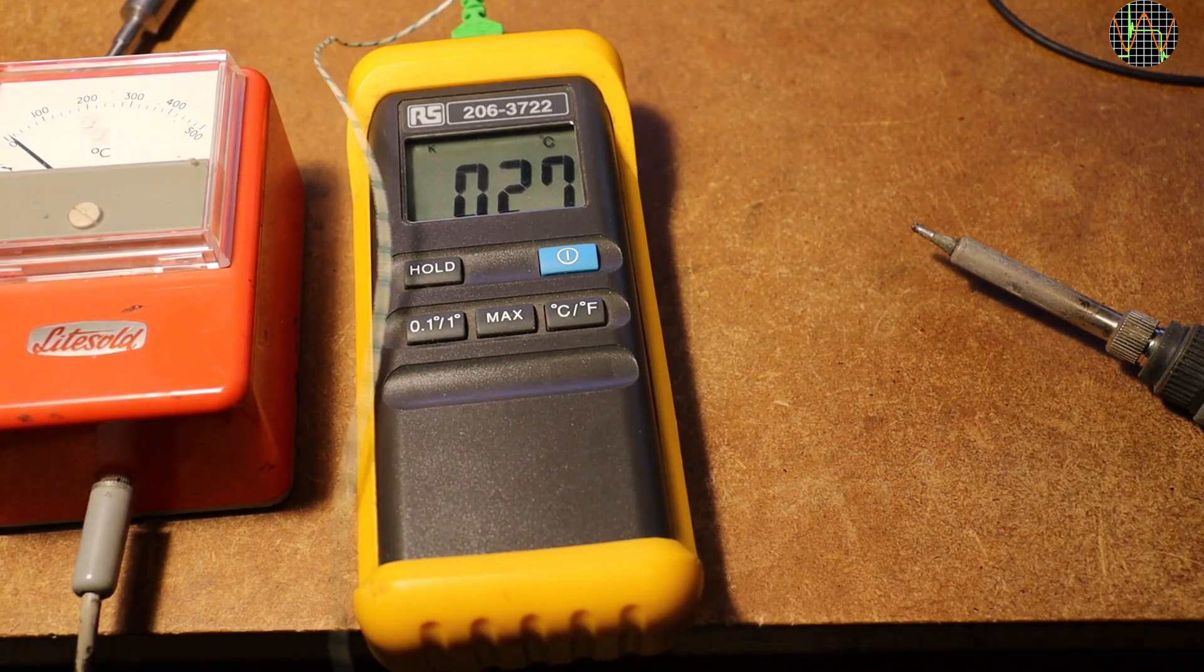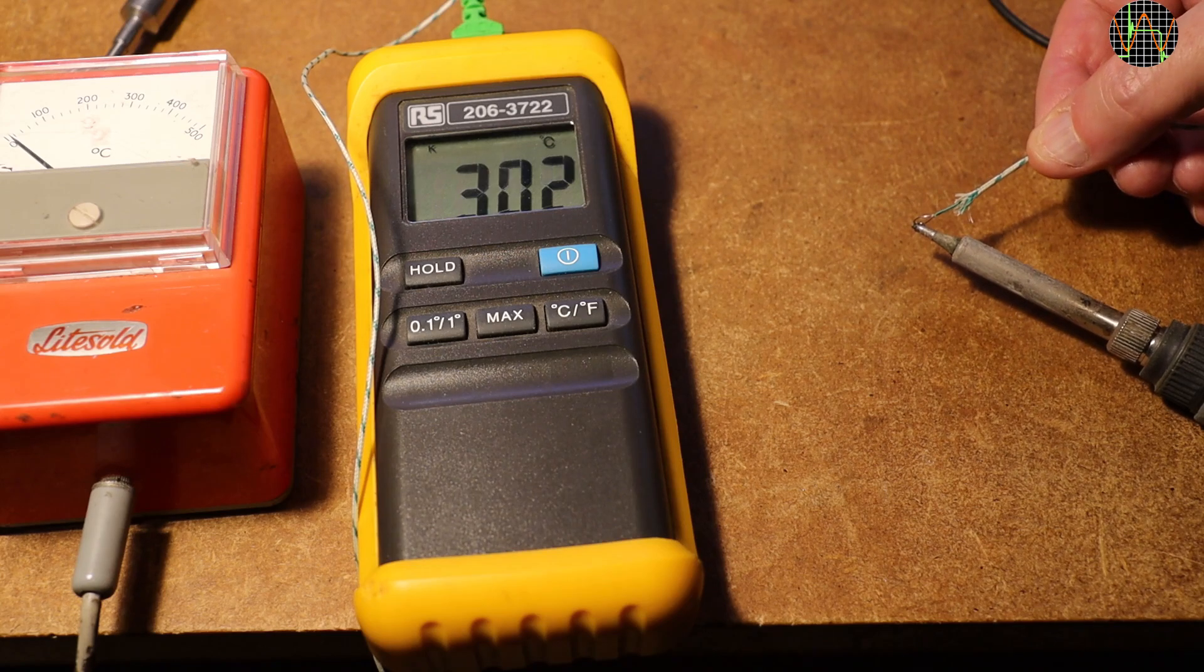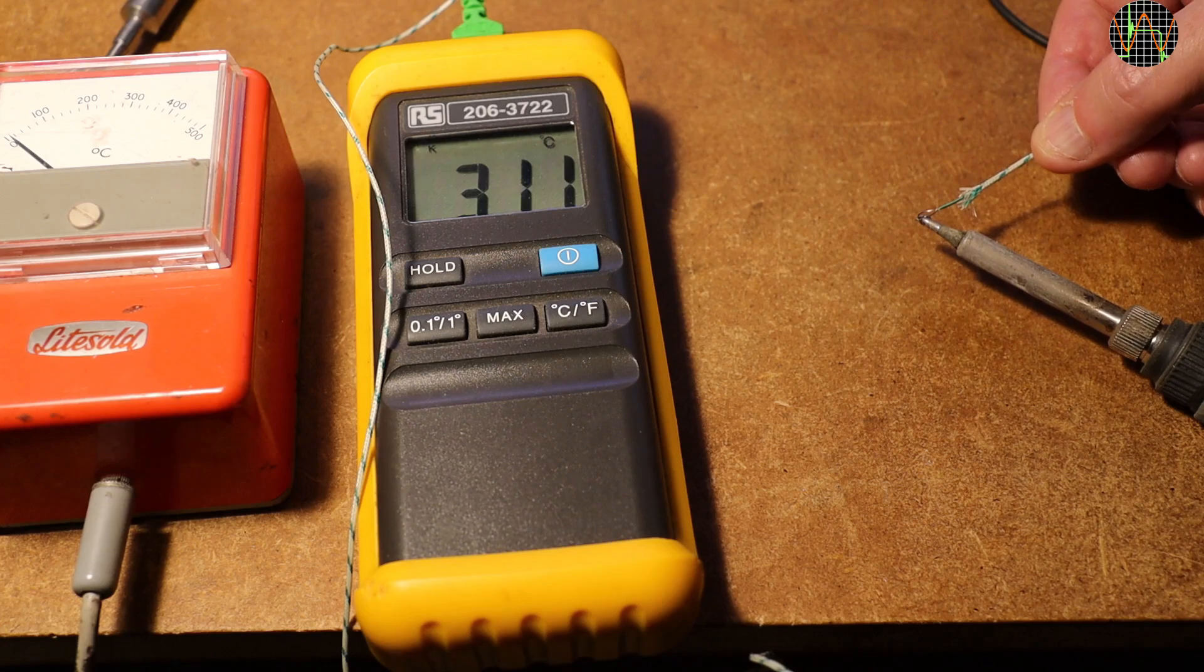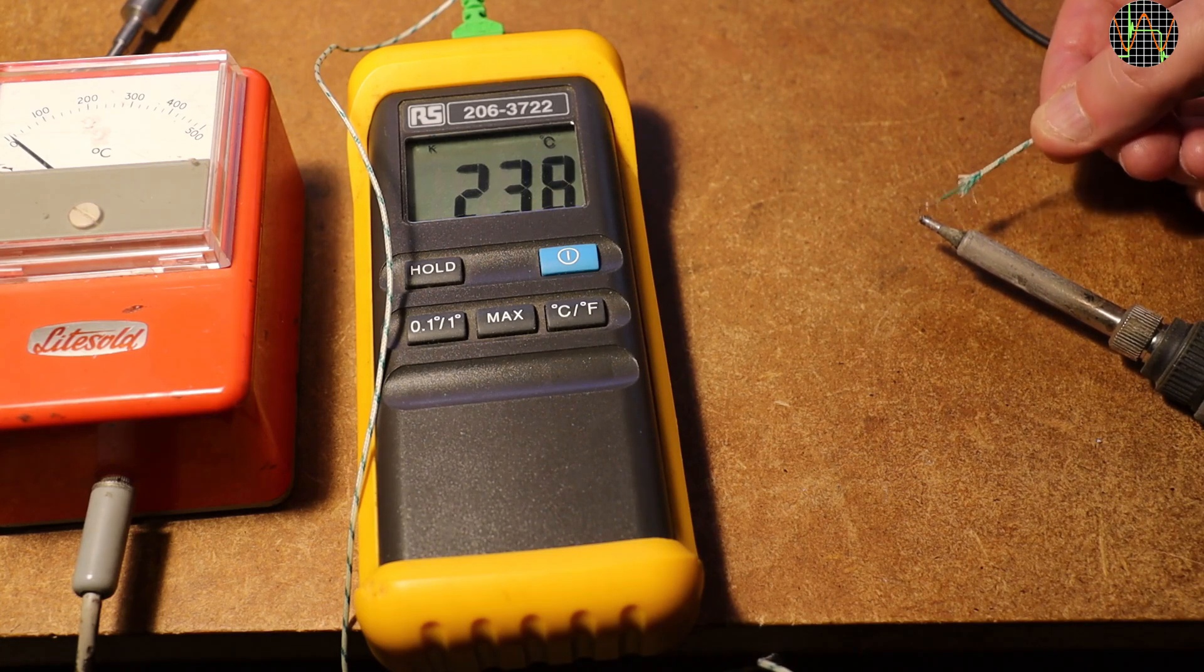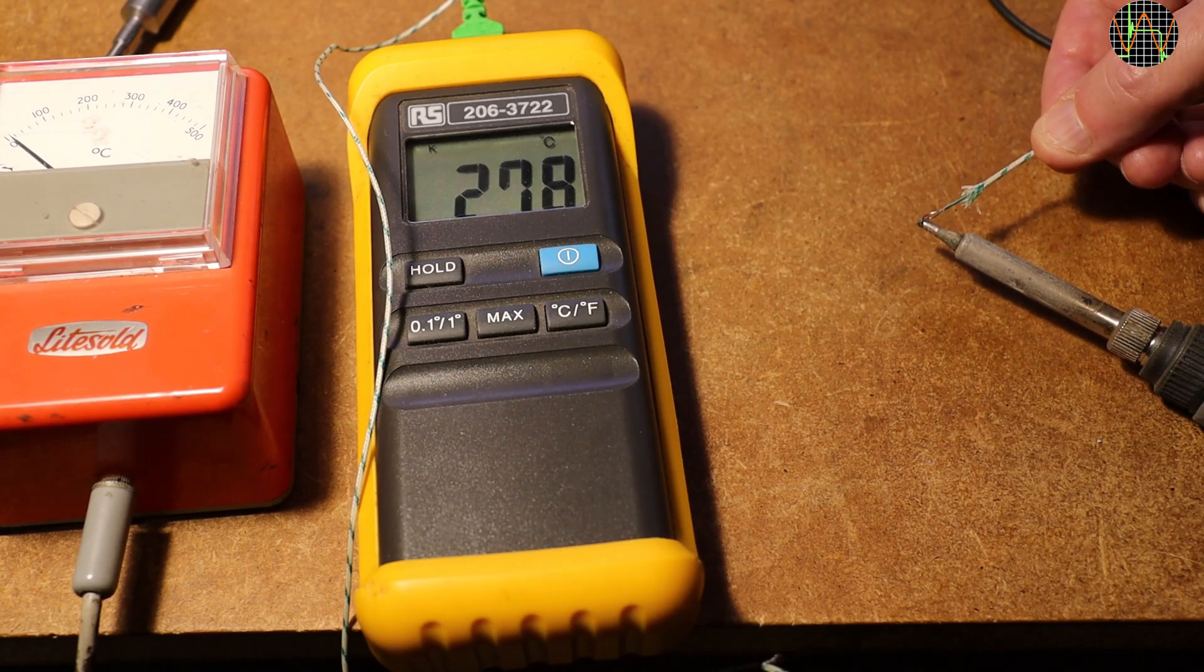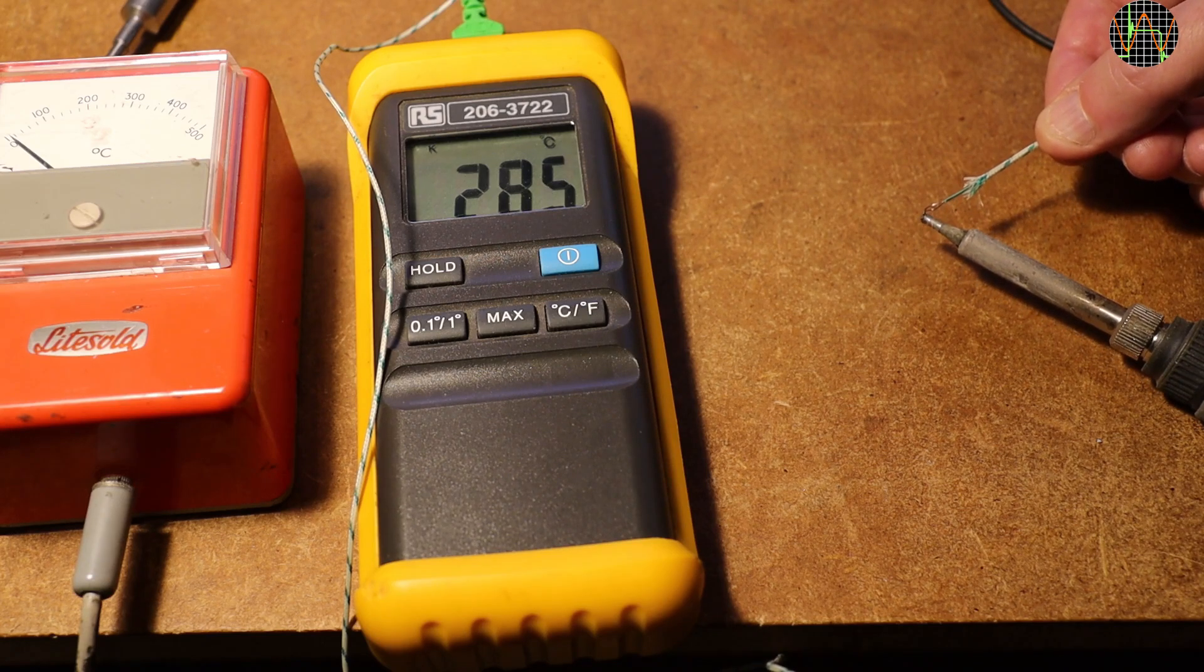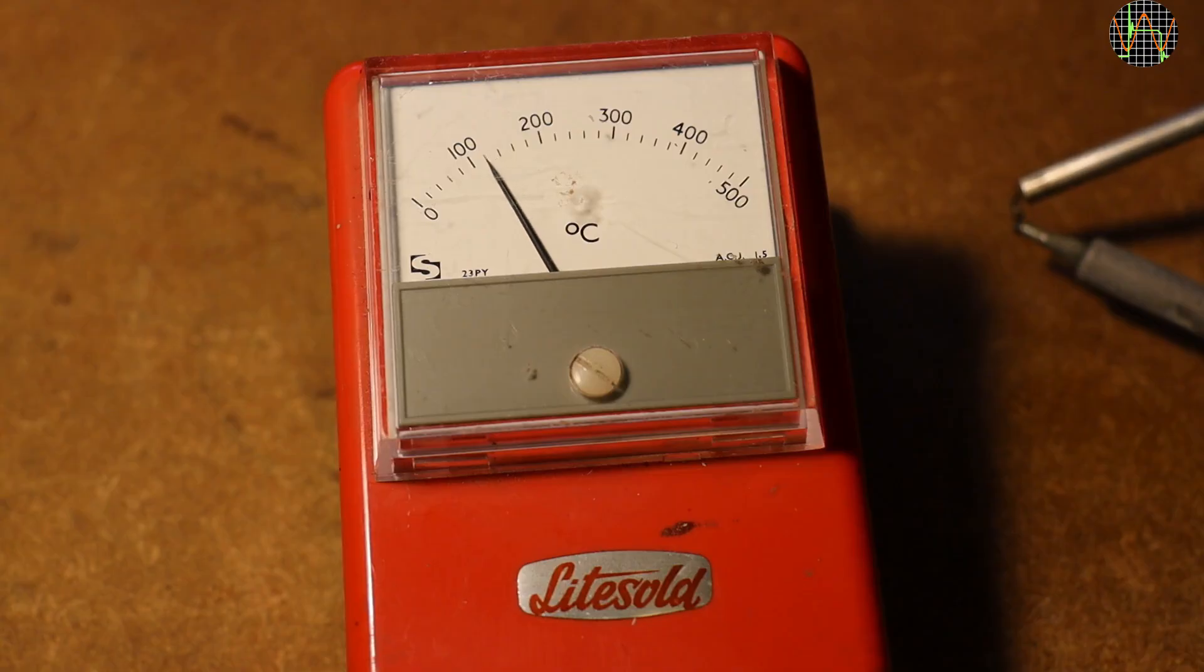A quick test with a high-quality K-type thermocouple shows about 320 degrees Celsius. The reading depends a lot on getting a good thermal contact, which is why the instruction of the light sold says to use a freshly tinned tip. I do not want to mess up my thermocouple with solder, and since I have tested my Hakko before, I am pretty confident that the temperature is really close to 350 degrees Celsius. Let's see what the light hole says.